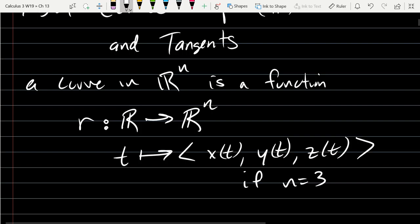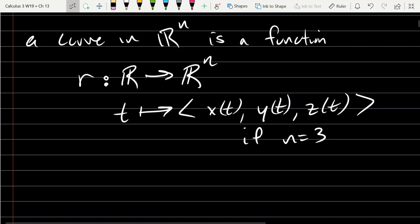Of course if n is 2, you don't have a z. And if n is 4, you can't use x, y, z anymore, so you have to think of other names for it. But we're mostly going to be in three dimensions.